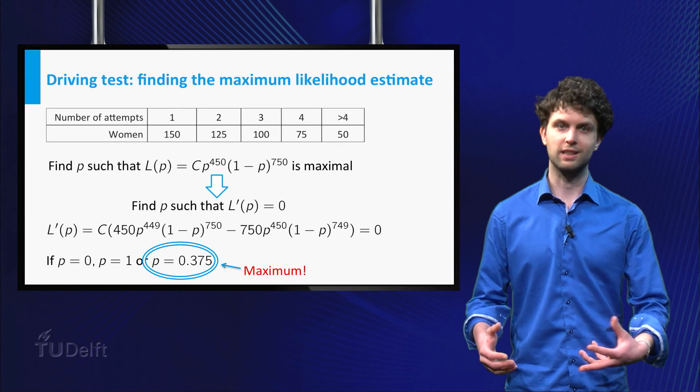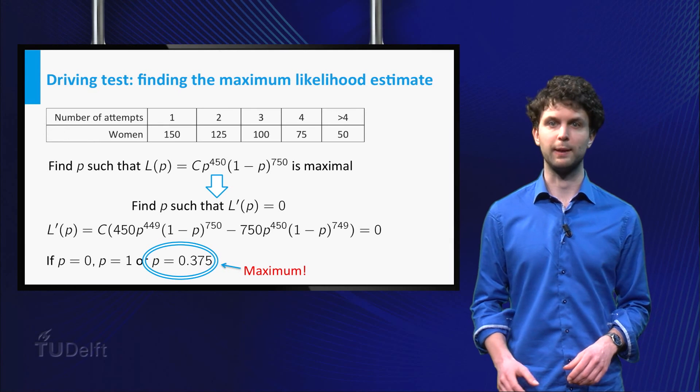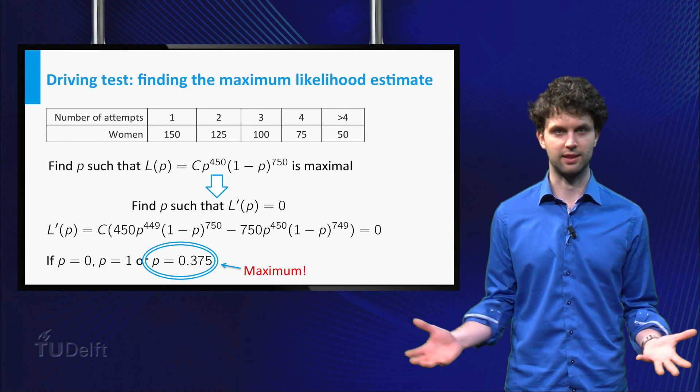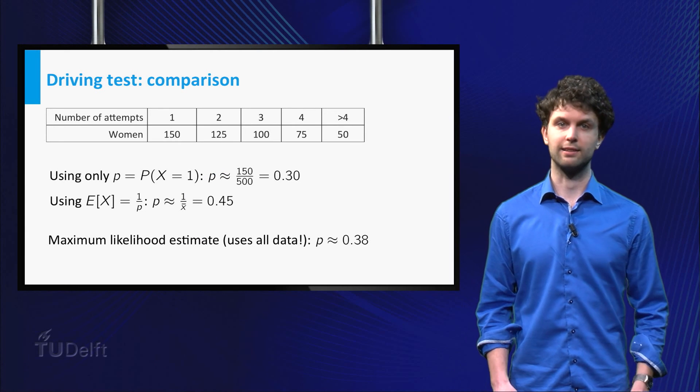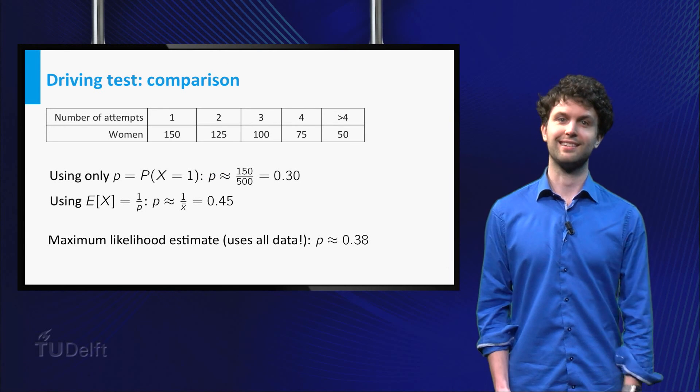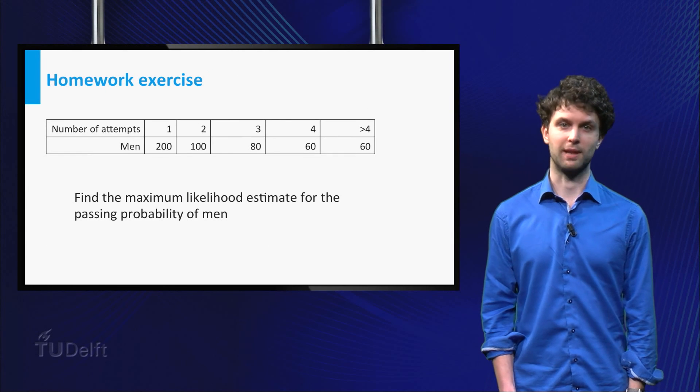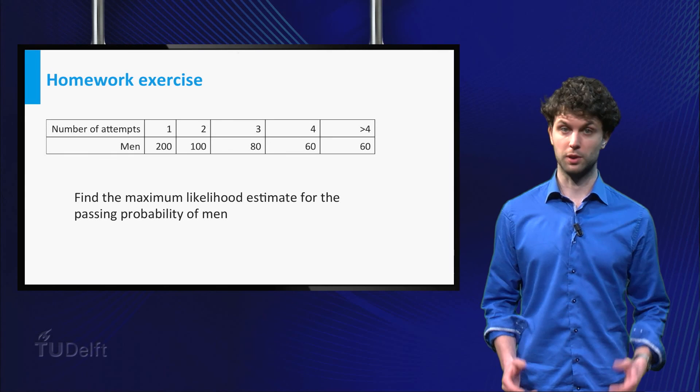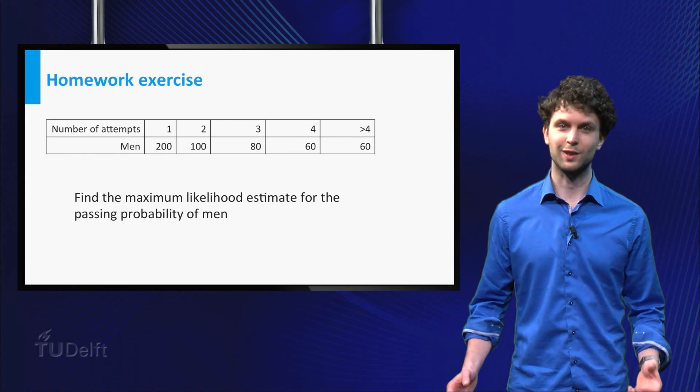So using the maximum likelihood principle, we find 38% as estimate for the success probability of a woman passing her driving test. Note that in this case, the maximum likelihood estimate is indeed smaller than the estimate based on the sample mean. You should test your understanding of the maximum likelihood principle by computing the maximum likelihood estimate for men. You can take your answer to class.